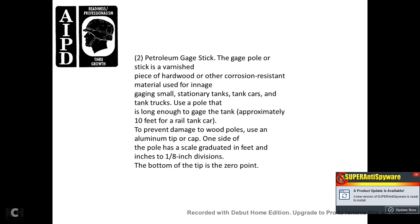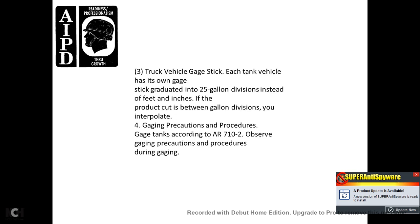15. The petroleum gauge stick, or gauge pole, is a varnished piece of wood or other corrosion-resistant material used for ingage gauging in small sanitary tanks, tanker cars, and tanker trucks. Use a pole long enough to gauge the tank — approximately 10 feet for a railway tanker car. To prevent damage to the wood poles, use an aluminum tip cap. One side of the pole is scaled and graduated in inches to one-eighth-of-an-inch divisions. The bottom of the tip is the zero point.